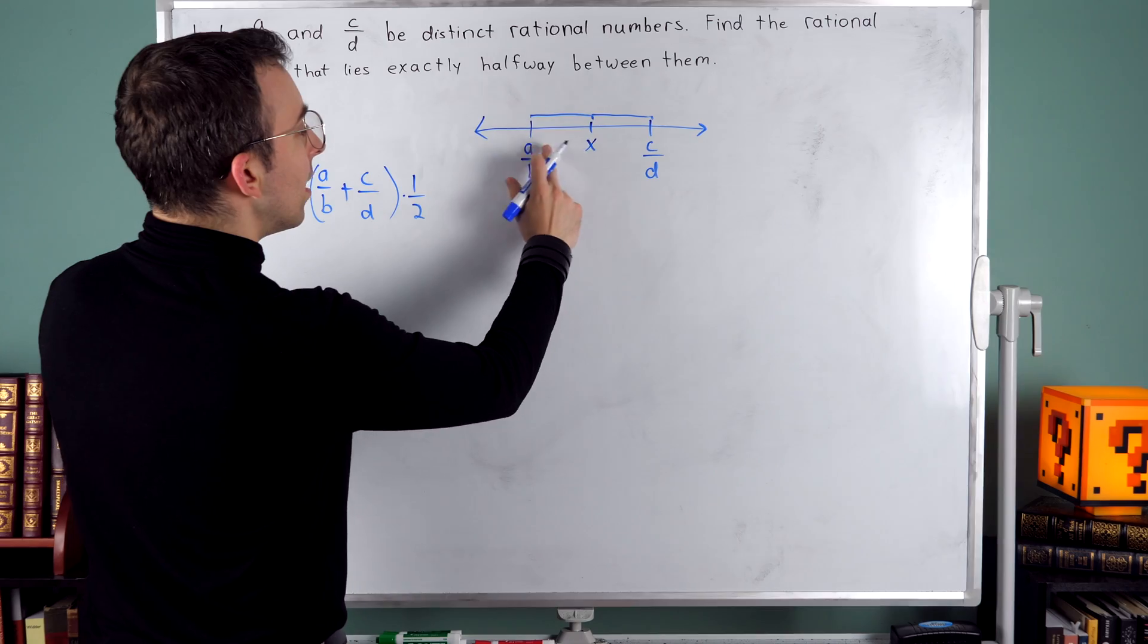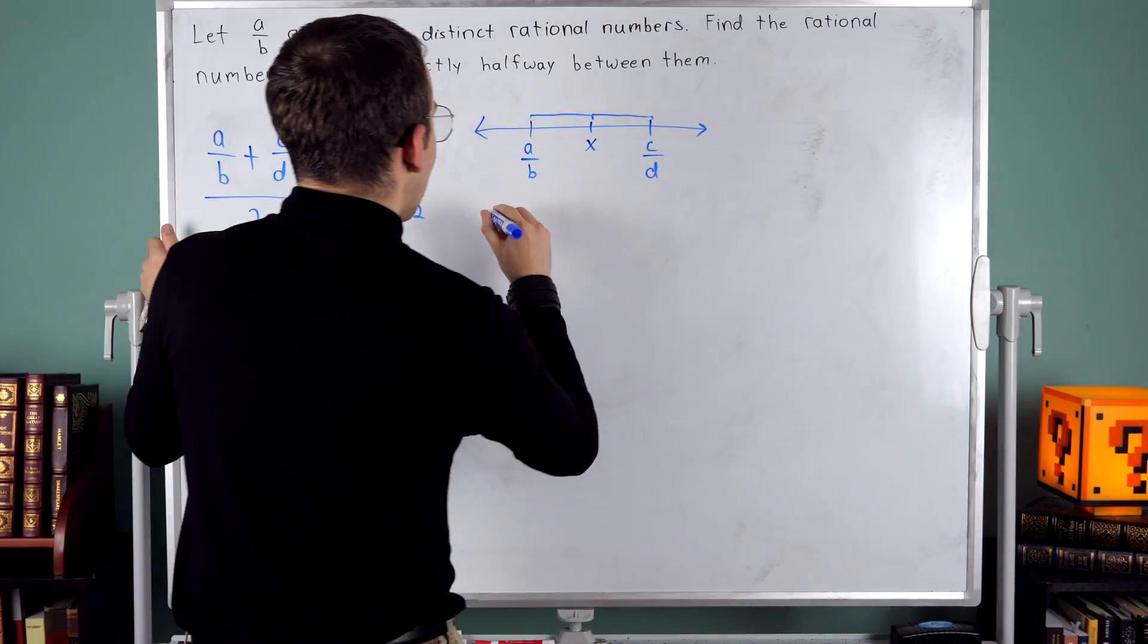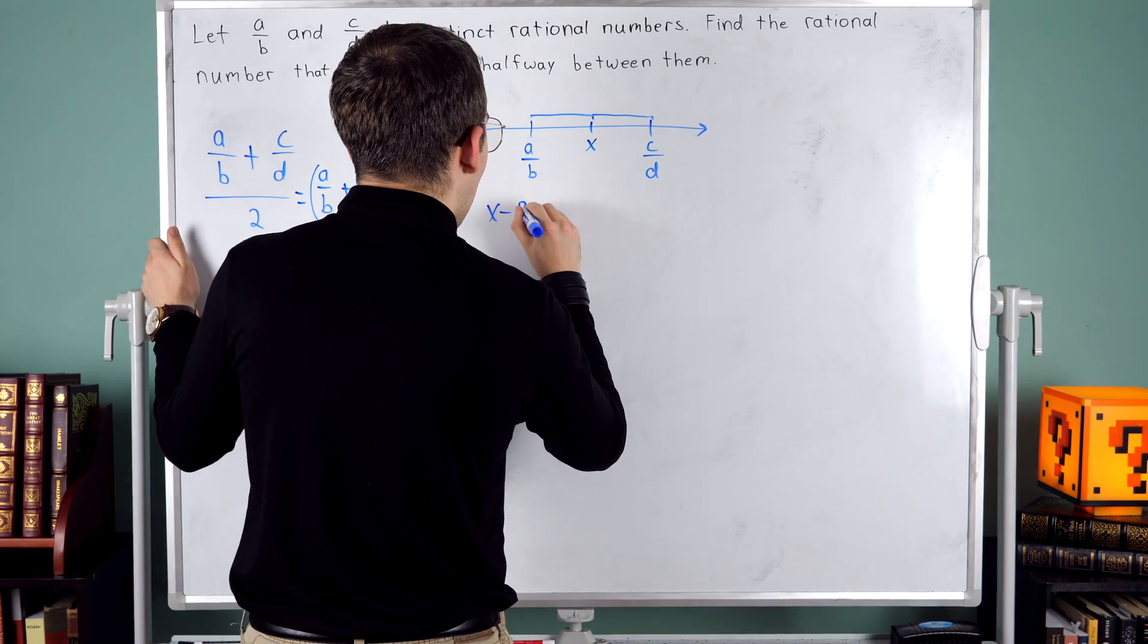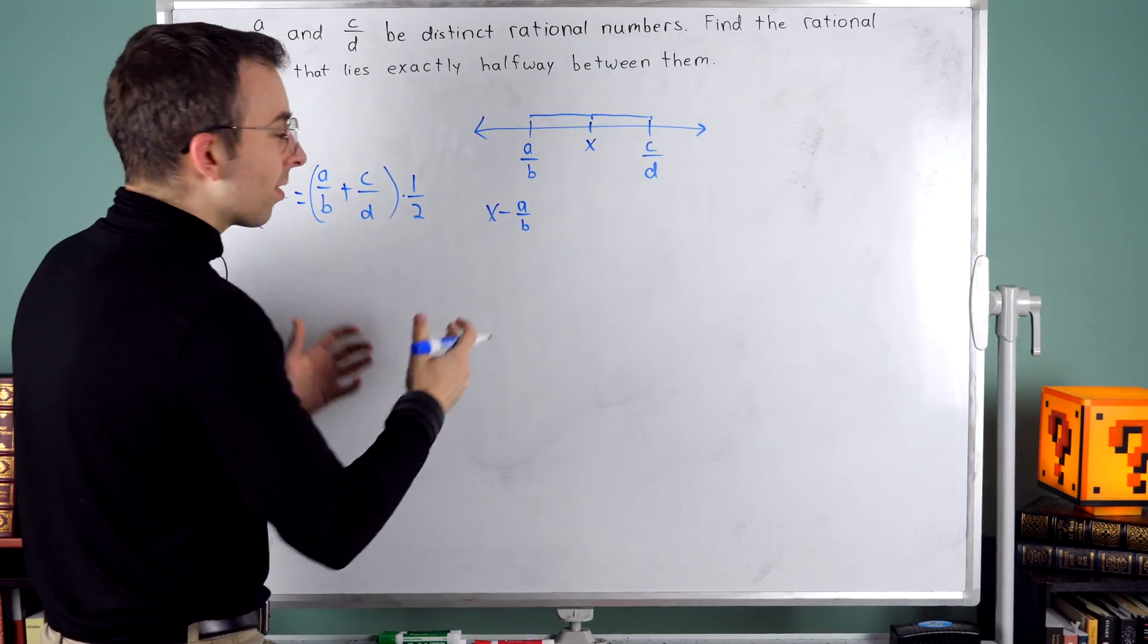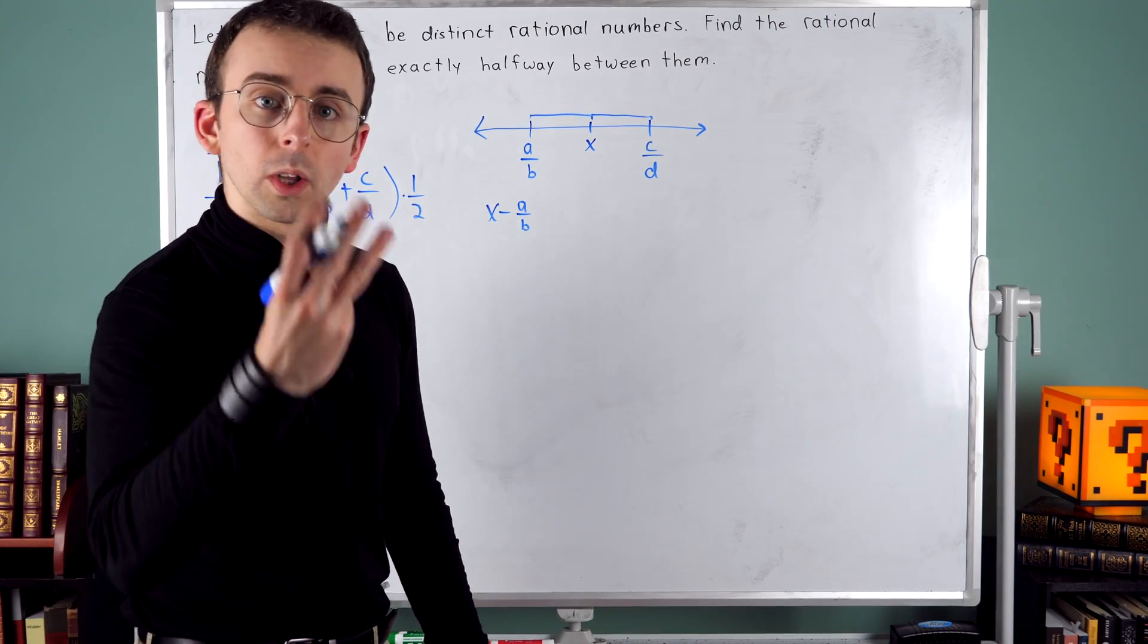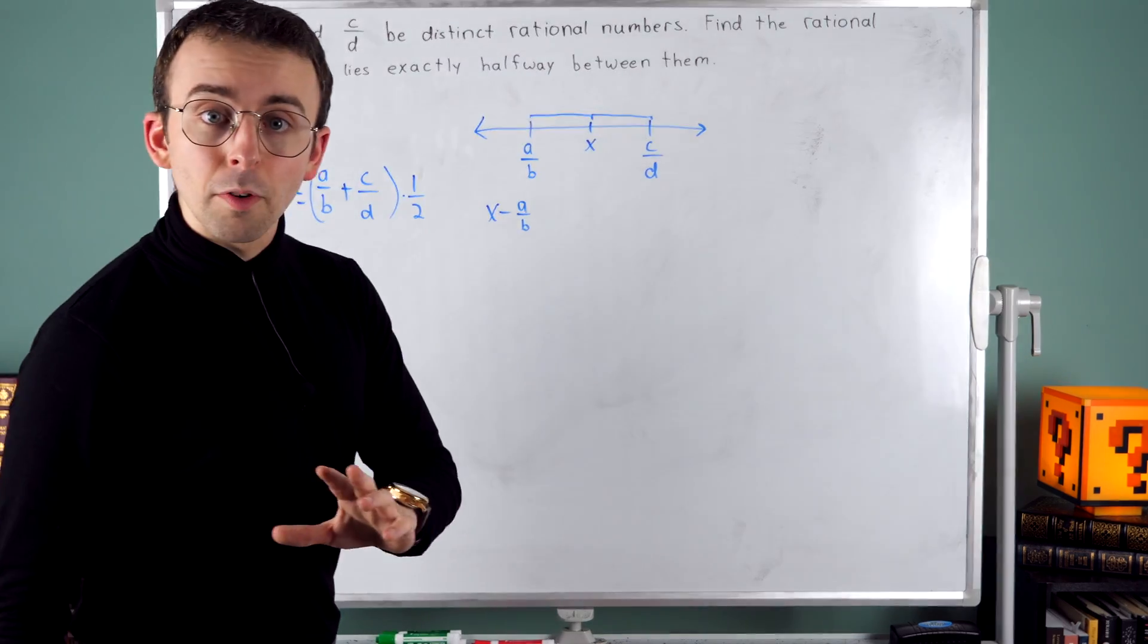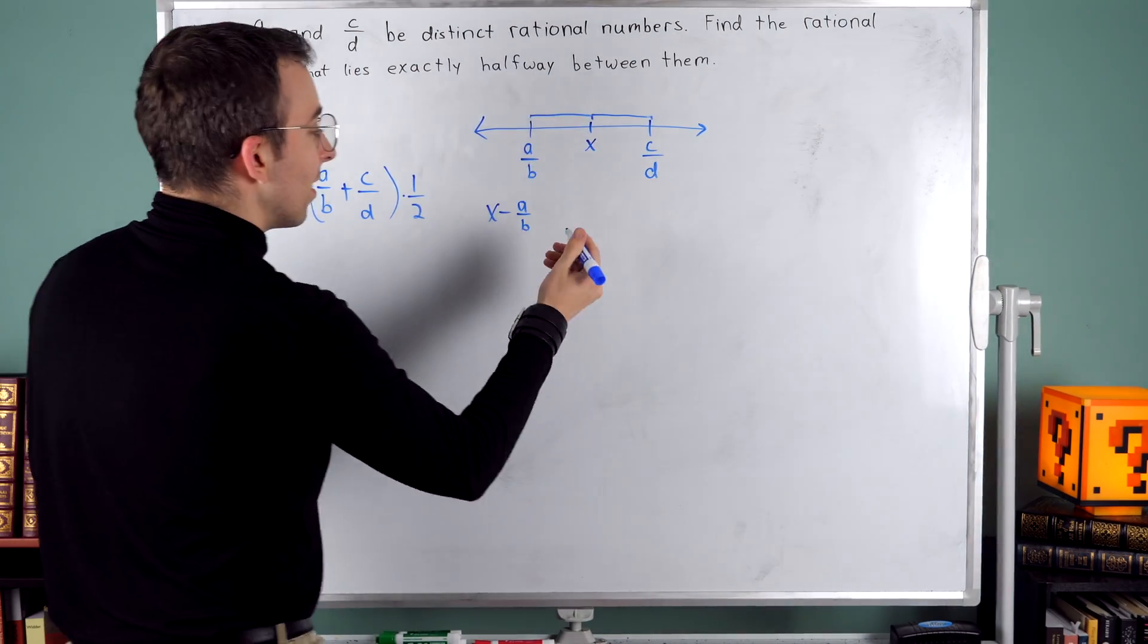So what is this distance from A over B to x? Well, that is x minus A over B, just like the distance from 2 to 5 is 5 minus 2, or 3. I know that this distance x minus A over B is the same as this distance, which is C over D minus x.